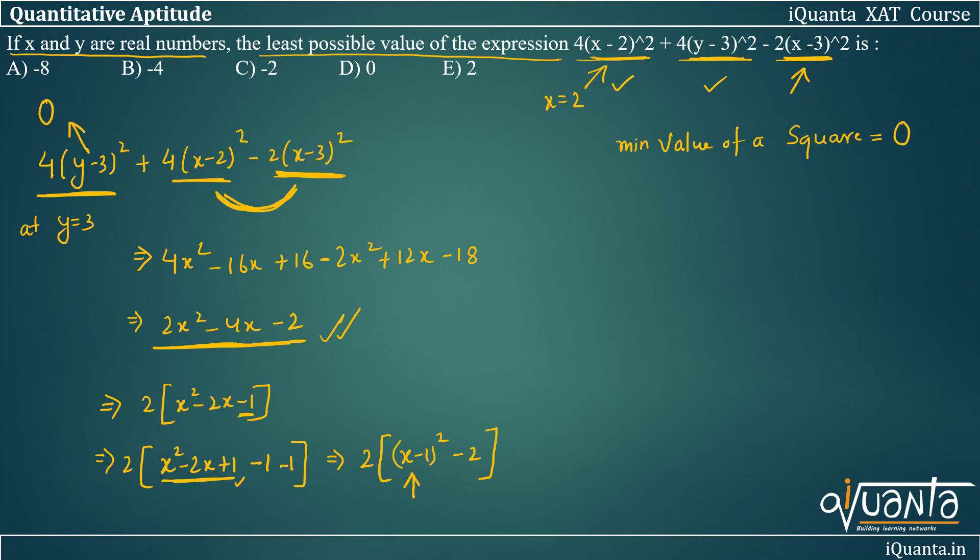At last, the value of (x-1)² becomes 0 at x = 1 because we need to minimize it. So we get 2 times -2 inside the bracket, which gives us -4, which is the minimum value. The minimum value of this expression is -4. Option B is the correct answer. I hope this is understood. If there is a doubt, please ask again.